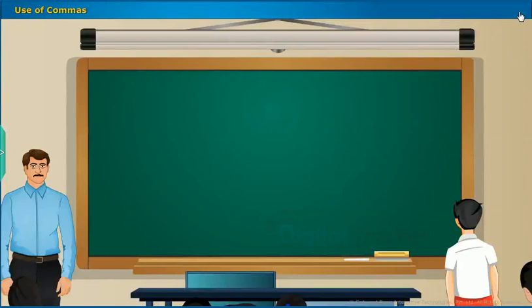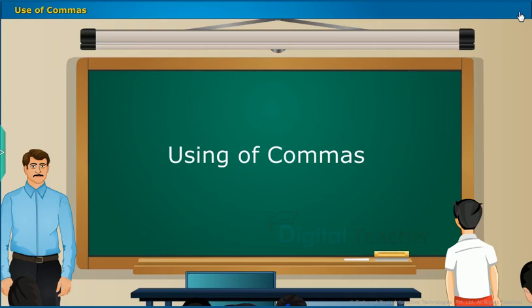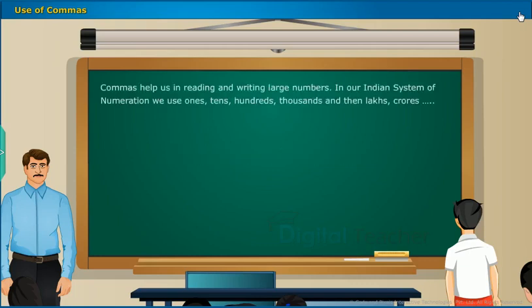In this section, we are going to learn about using of commas in appropriate places in large numbers. We have often used commas while writing numbers. Commas help us in reading and writing large numbers. In our Indian system of numeration, we use ones, tens, hundreds, thousands, and then lakhs, crores and so on.